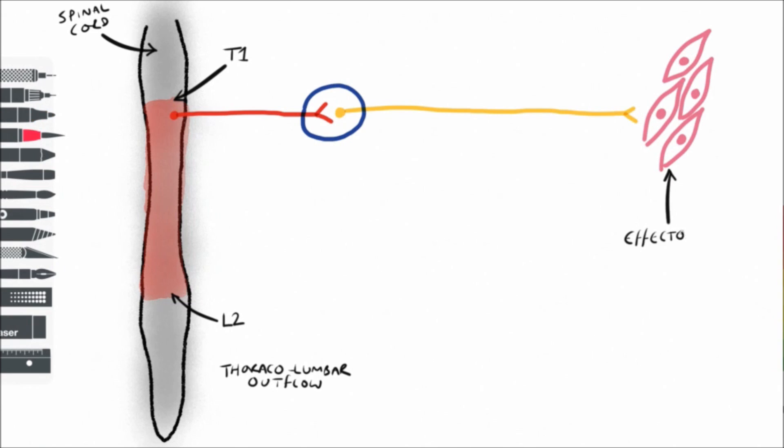Sympathetic nerves exit the spinal cord from every segment between T1 and L2, and this is commonly referred to as a thoracolumbar outflow.